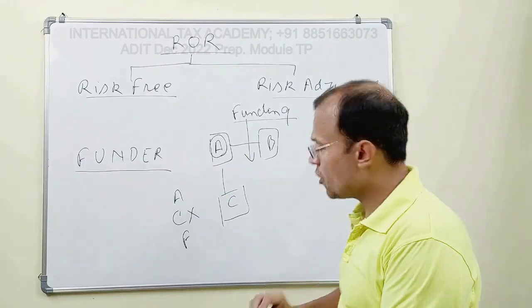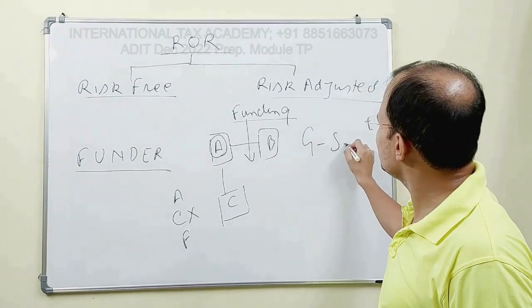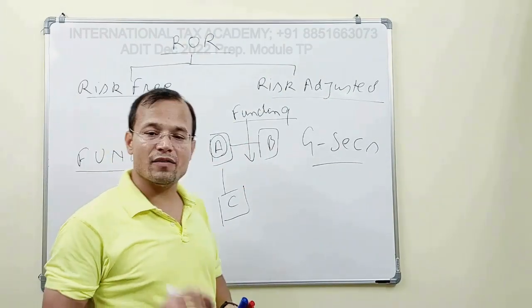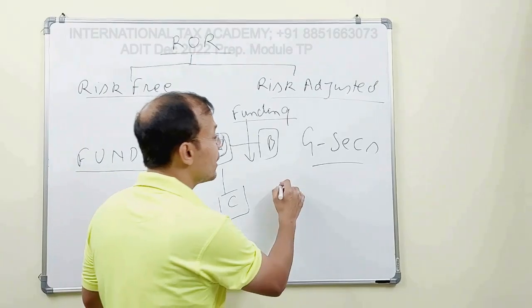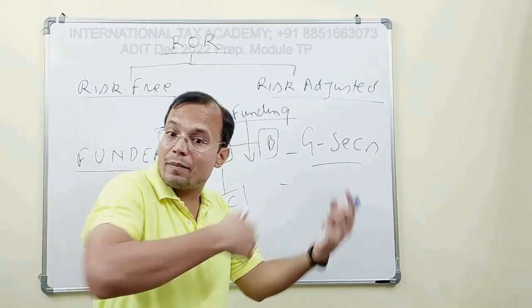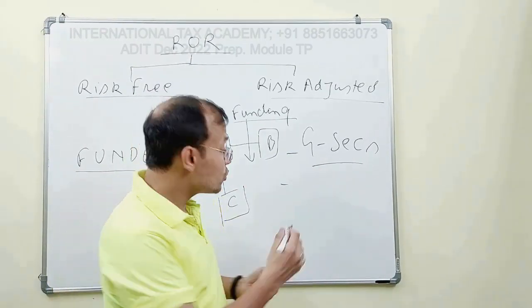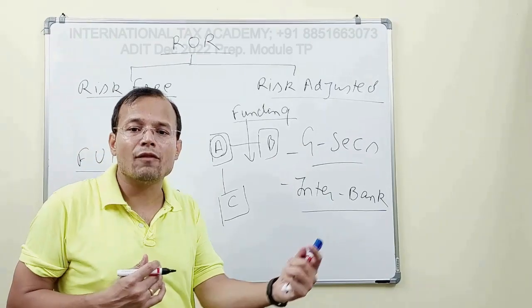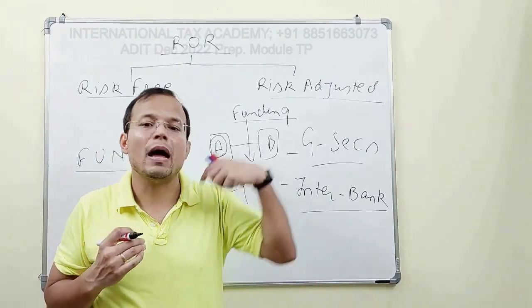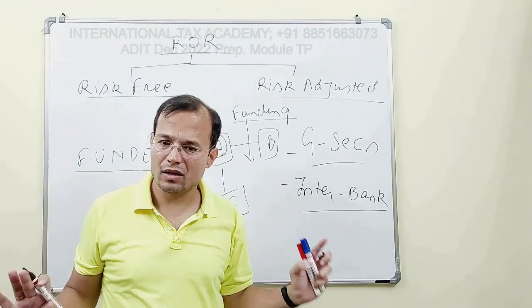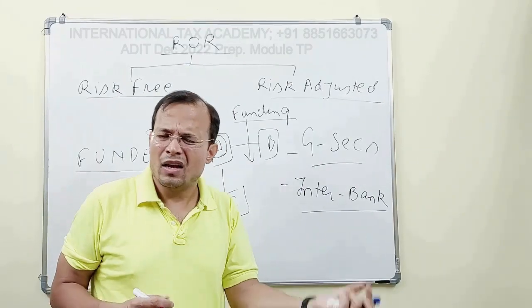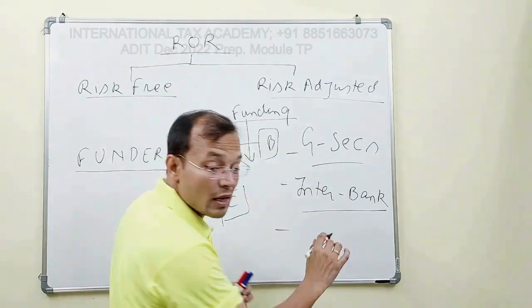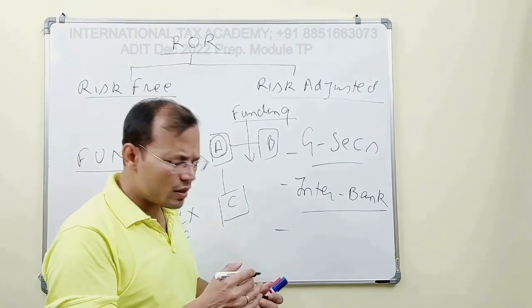Government securities, or G-secs, can be one reference rate for finding the risk-free rate of return. Another reference could be interbank rates, where central banks or large banks transact between themselves. If one bank provides funding to another safe bank, it won't earn a very high return — it's simply a money market operation. Other reference rates include repurchase rates and swap rates — all of these can be used for finding out risk-free rates of return.